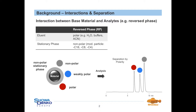Hence the following elution order is obtained by reversed-phase chromatography. Highly polar compounds are not well retained by the non-polar base material due to their very weak physical interactions towards the surface of the packing material and therefore elute fast. Weakly polar compounds, consisting of polar as well as non-polar moieties, interact stronger with the stationary phase and consequently elute later. The strongest interactions appear between non-polar compounds and the non-polar stationary phase, leading to the best retention and latest elution.